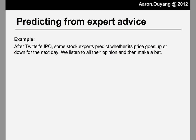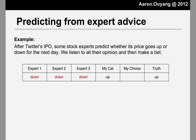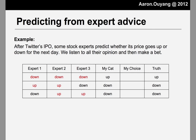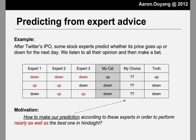We listen to their advice, but we have to make our own decision. In the real world, there's no way that someone can predict 100% correctly. But if somehow we know which one of these experts is the best, we can just follow their prediction and ignore the others. However, the problem is that we have no idea which one of them is the best. So our goal is that we want our prediction to be nearly as well as the best expert in hindsight — and that is our motivation.